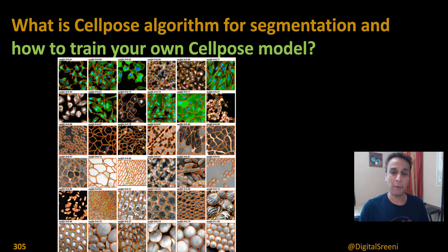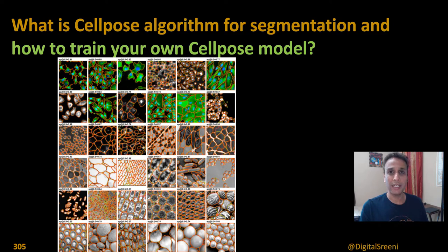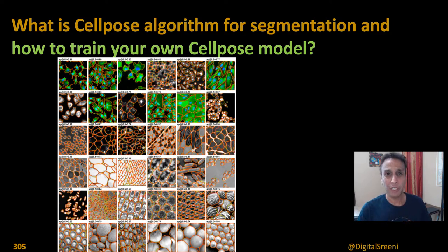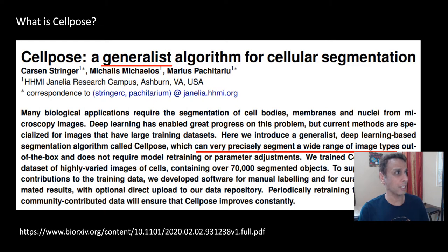After that, I'm going to jump on to Colab and walk you through the code. I'm going to reproduce what they have on the Cellpose GitHub page, except instead of showing the canned data they have, I'll show some data I downloaded from Kaggle along with the masks, and demonstrate how you can go ahead and train it. Let's jump into our discussion today.